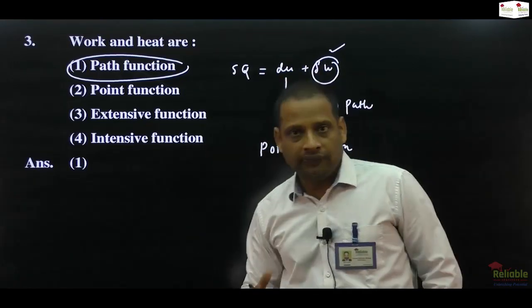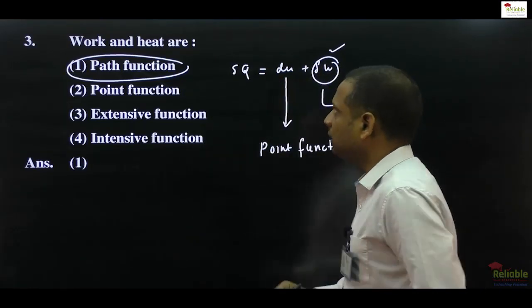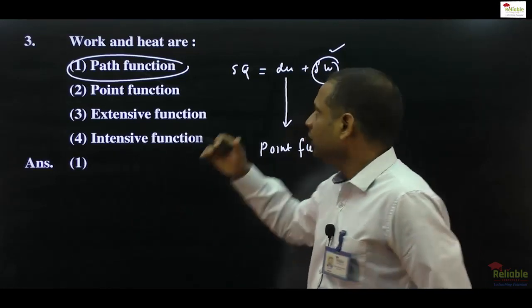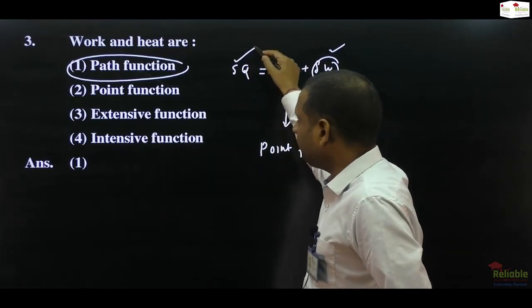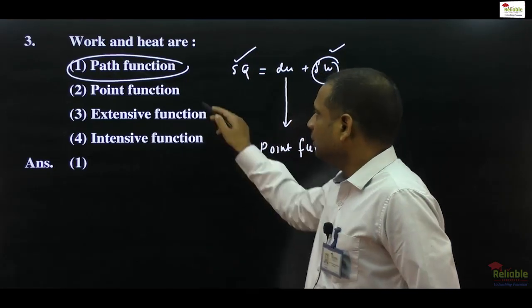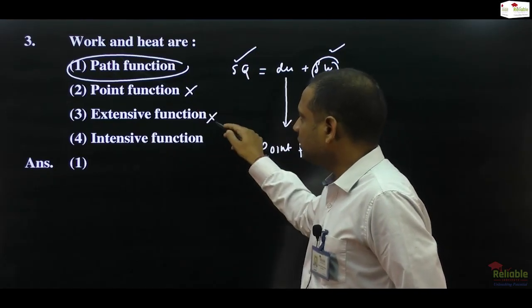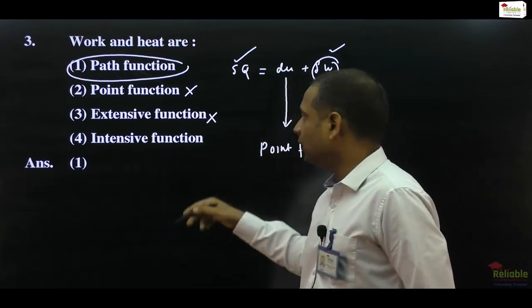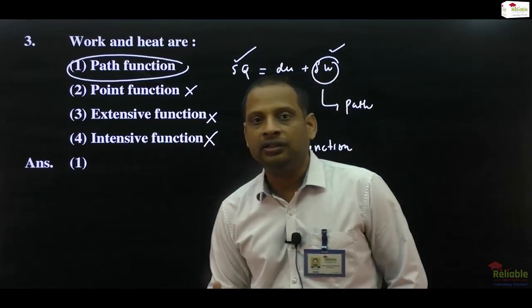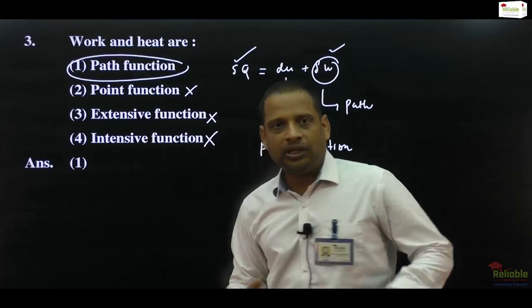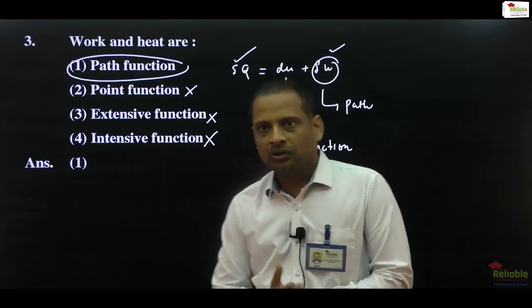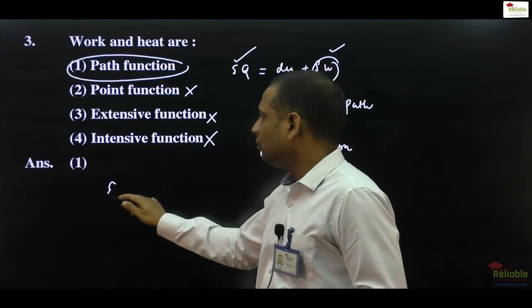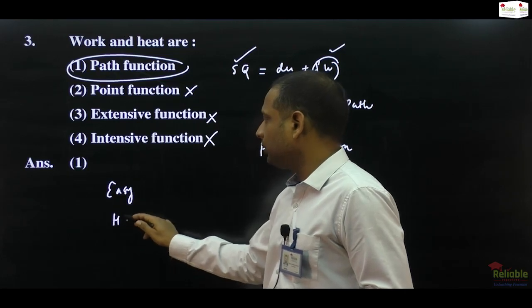This depends on path, but internal energy change is independent of path - it's a point function that depends on the point where you calculate it. So work is a path function, internal energy change is a point function, and heat change (absorbed or rejected) is also a path function according to first law of thermodynamics. Extensive functions are those which can be measured like mass or volume; intensive functions don't depend on quantity like density. This is an informative question - if you know the information you will get it, and there is no calculation. So these three questions are all in easy category, from the heat and thermodynamics chapter.